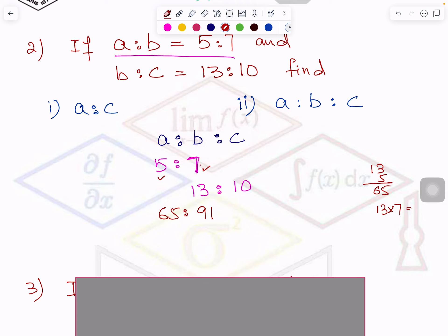Now you will multiply this by 7 and this by 7. So it will be 91, because 7 times 13 or 13 times 7 will be 91. And 7 times 10 is 70. So you got at the end 65 is to 91 is to 70.